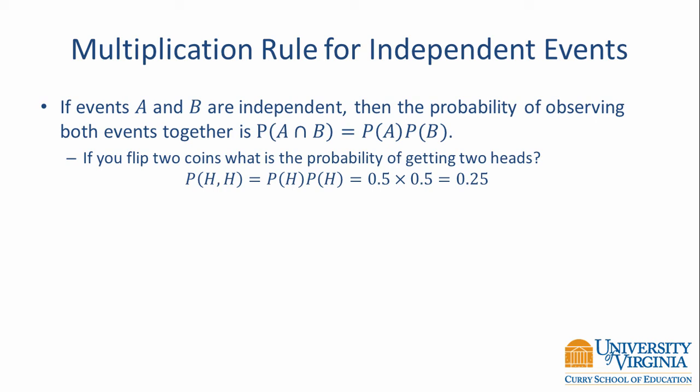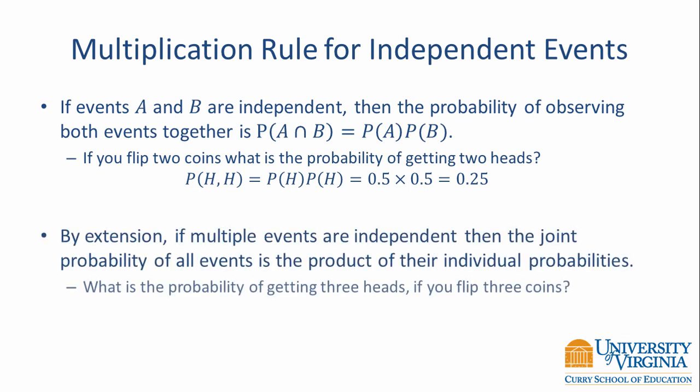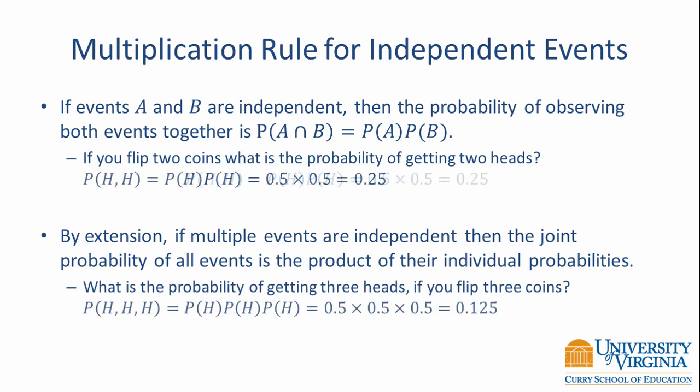The probability of observing two heads when you flip two coins is equal to 0.25. The multiplication rule extends to multiple events. If you would like to know the probability of getting three heads when you flip three coins, that's going to be the probability of a head times the probability of a head times the probability of a head, which equals 0.125.